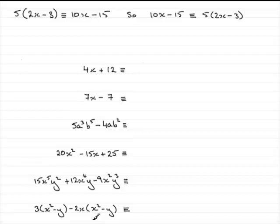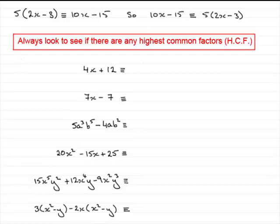Whenever you've got to factorise an expression, the first thing you should always do is try and look to see if there are any highest common factors — HCFs in other words — in the terms in your expression.